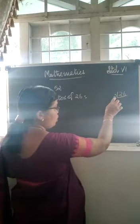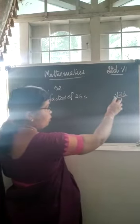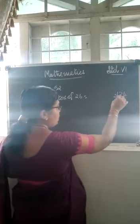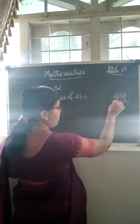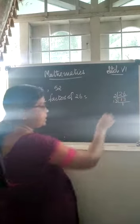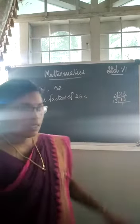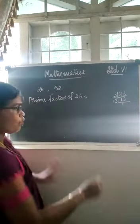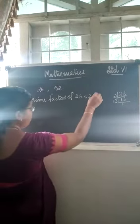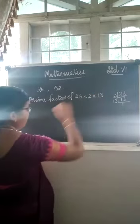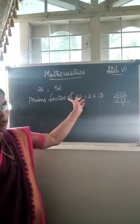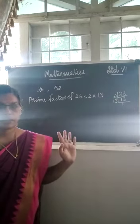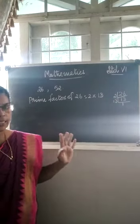From 2, how many 2's can be taken? 1 times 2 is 2. Then from 6, how many 2's? 3 twos. Now, 13 is a prime number, so 13 can be divided by 13 only — 13 once is 13. The prime factorization is over. So 2 into 13 gives us 26. These are the prime factors: 2 and 13 are the prime factors of 26.